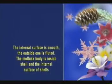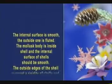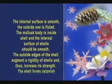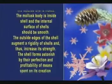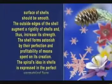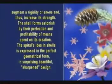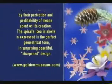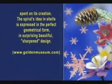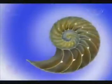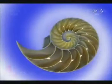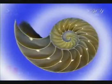When investigating the shells of mollusks, the form and structure of the internal and external surfaces of the shells attracted scientists' attention. The internal surface is smooth, while the outside one is fluted. The mollusk body is inside the shell, and the internal surface of shells should be smooth. The outside edges of the shell augment the rigidity of cells and thus increase its strength. The shell forms astonish by their perfection and profitability of means spent on its creation. The spiral's idea in shells is expressed in a perfect geometrical form — in a surprising, beautiful, sharpened design.